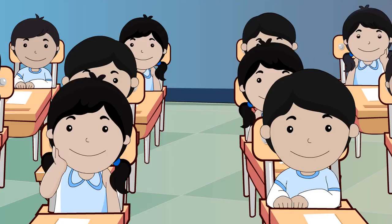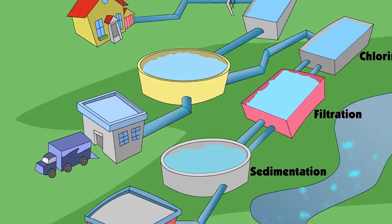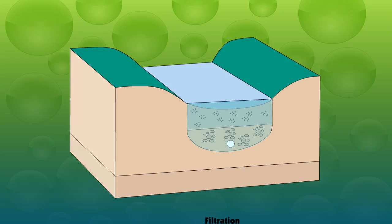The steps involved in water treatment plants are: The water in huge tanks is left undisturbed so that heavy insoluble particles settle down. This is known as sedimentation.